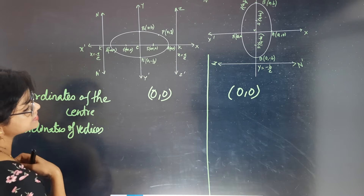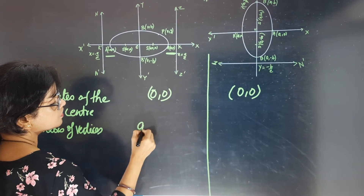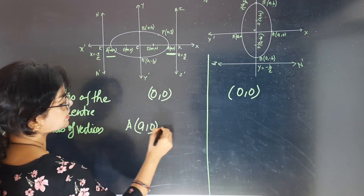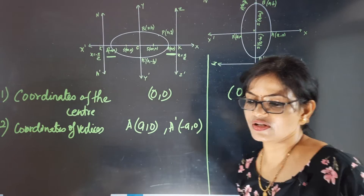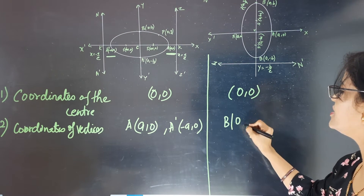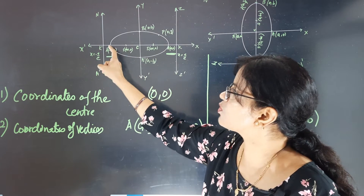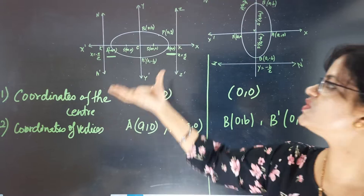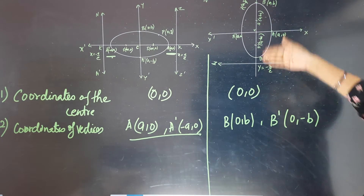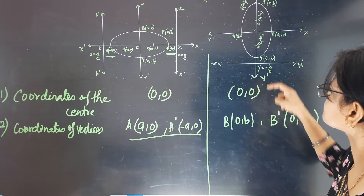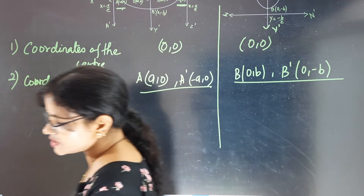Second: coordinates of the vertices. For the ellipse with major axis on the x-axis, vertices are A=(a, 0) and A'=(-a, 0). For the ellipse with major axis on the y-axis, vertices are B=(0, b) and B'=(0, -b).